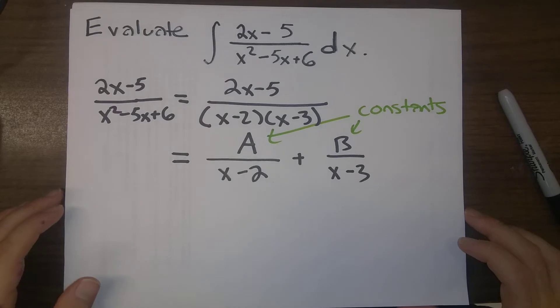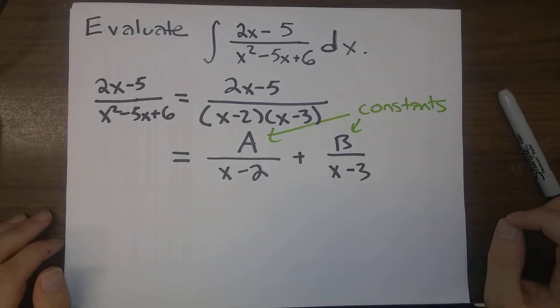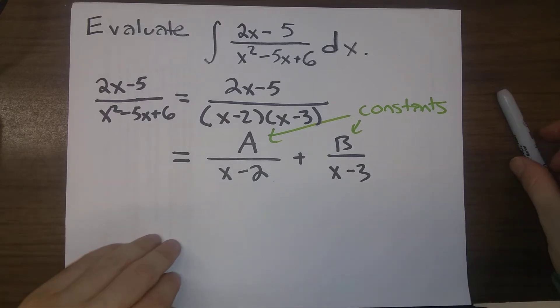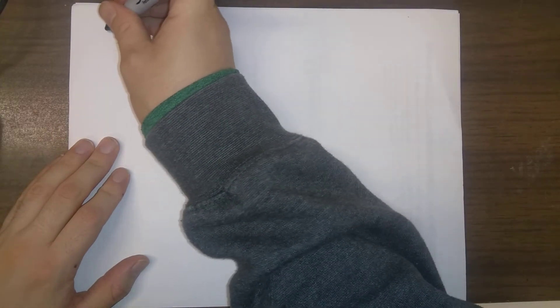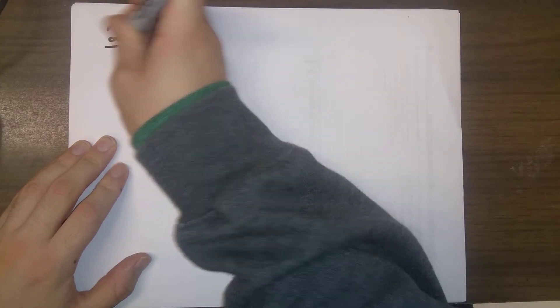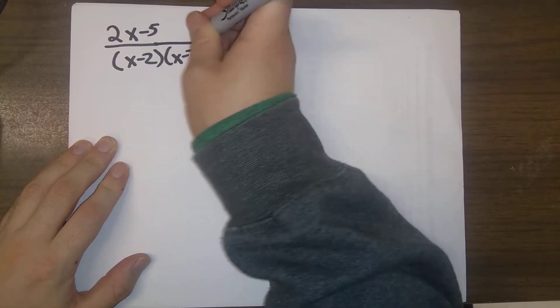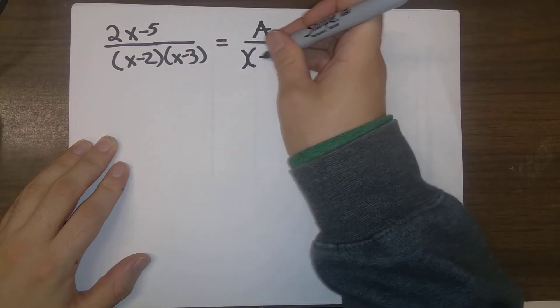So the tricky part of this is going to be actually figuring out what are A and B in this situation. Here's the trick. Let me go to a new slide for this.